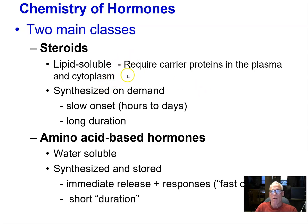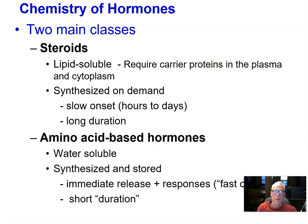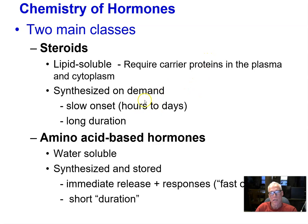Steroid hormones are carried by carrier proteins because they can't dissolve readily in the blood. Those hydrophobic chemicals bind to little pockets in carrier proteins and circulate in the body. They're synthesized on demand, meaning when we stimulate the gonads or the adrenal cortex, that's when hormone production begins. We have to wait for that endocrine gland to produce and release the hormone — it's a slow process — and once produced, they tend to hang around for a long time: slow onset and long duration.